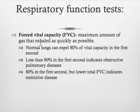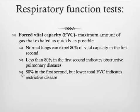We need to talk about this in order to discuss disorders. Forced vital capacity is a test where you blow out gas as fast as you can. Normally you can expel 80% of your vital capacity in the first second. Any less than that indicates obstructive pulmonary disease. If you get 80% in the first second but then can't get the rest out, that's going to be a restrictive disease.